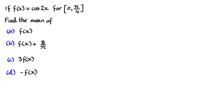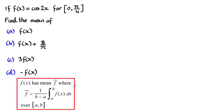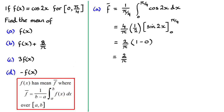I've got a question here for further practice. Feel free to pause the video if you'd like to have a go. Welcome back. As a reminder, if f of x has mean f bar, then f bar is defined by this integral over the interval a to b. For this question we need to find first of all the mean of f of x, given by f bar.